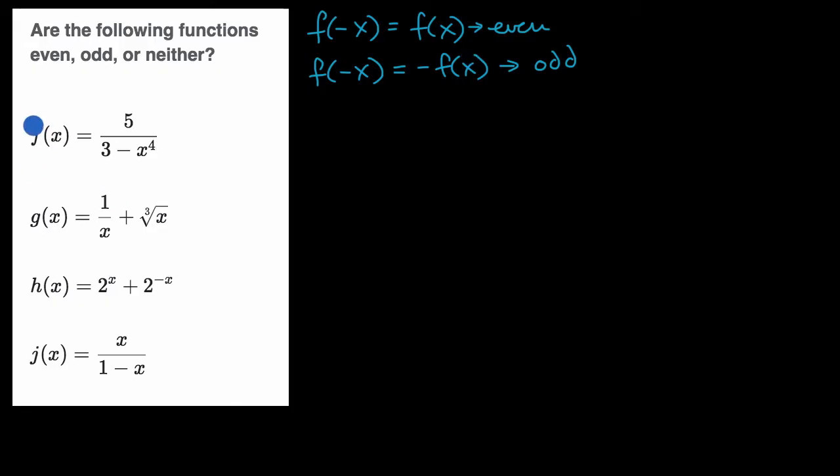So let's go to this first one right over here, f of x is equal to five over three minus x to the fourth. And the best way I can think about tackling this is let's just evaluate what f of negative x would be equal to. That would be equal to five over three minus, and everywhere we see an x, we're going to replace that with a negative x to the fourth power. Now what is negative x to the fourth power?